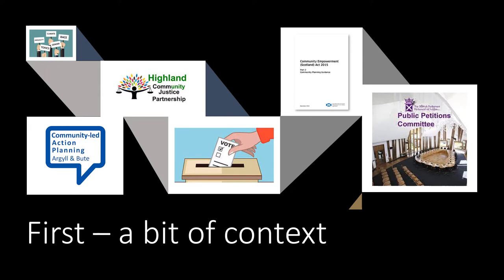In Scotland, we firmly believe that our services will be better and more effective if we involve people and communities in designing and improving them. So in recent years, we have also passed laws to improve participation and decision making about the services we use. This includes laws set out in the Community Empowerment Scotland Act from 2015, which places duties on public bodies to work with people to improve services and creates rights for communities to be involved in improving services.